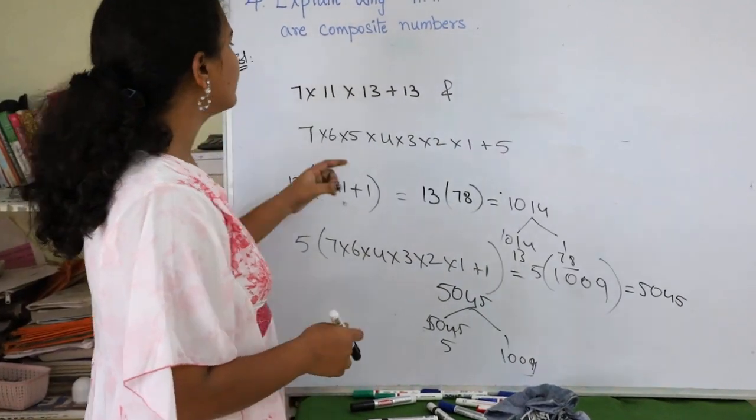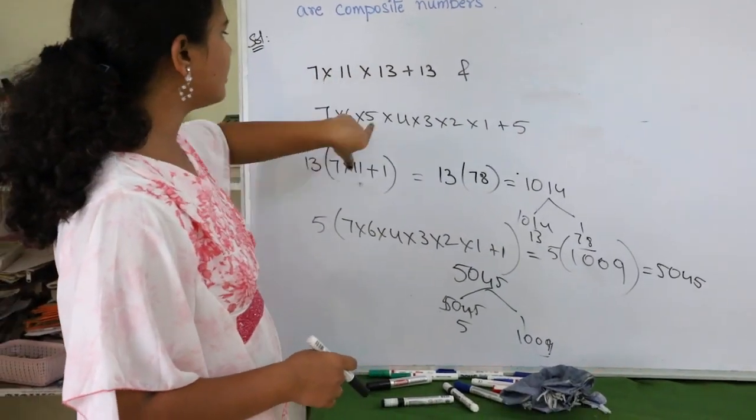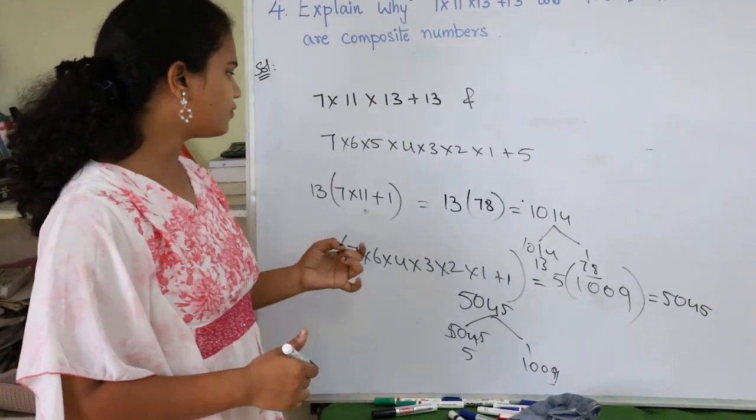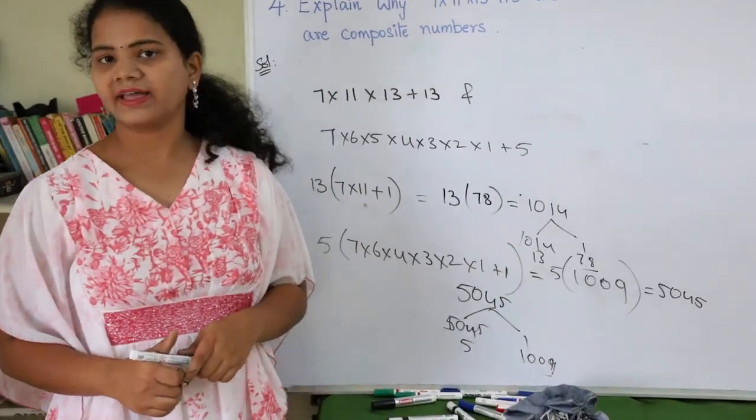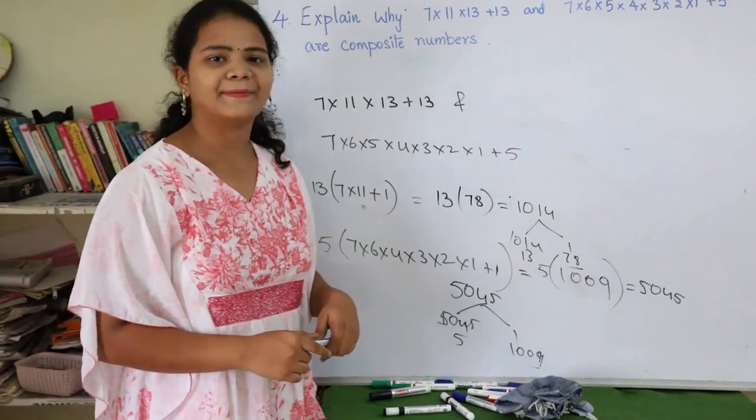Therefore, 7 × 11 × 13 + 13 and 7 × 6 × 5 × 4 × 3 × 2 × 1 + 5 are composite numbers. Thank you.